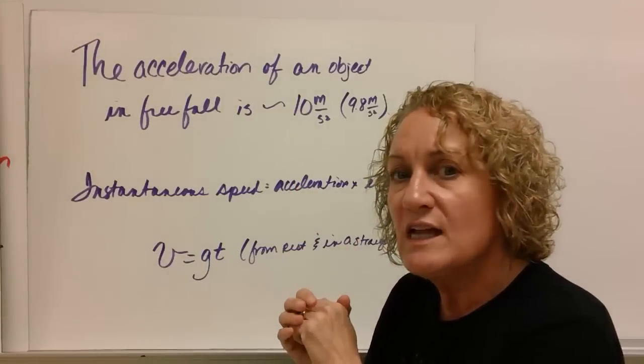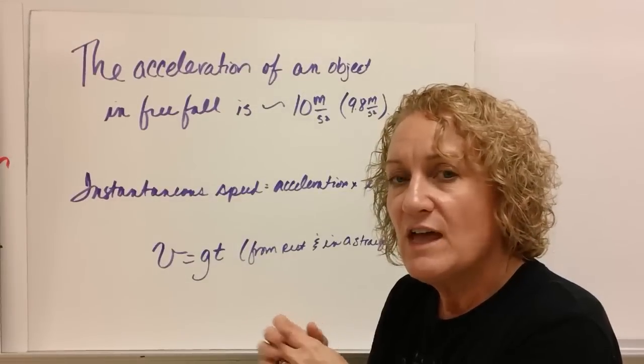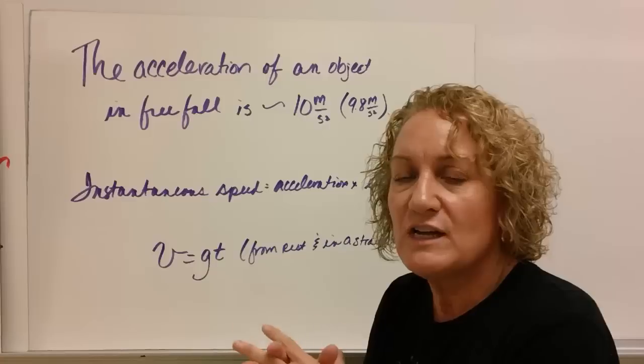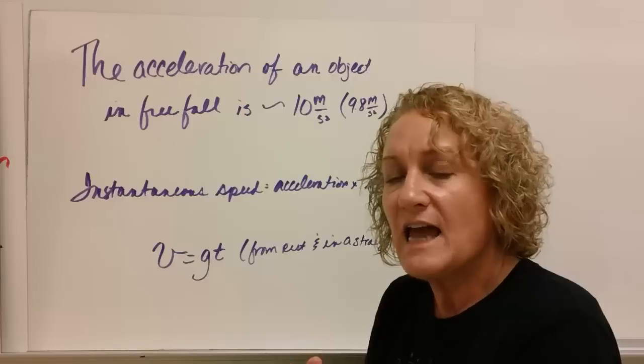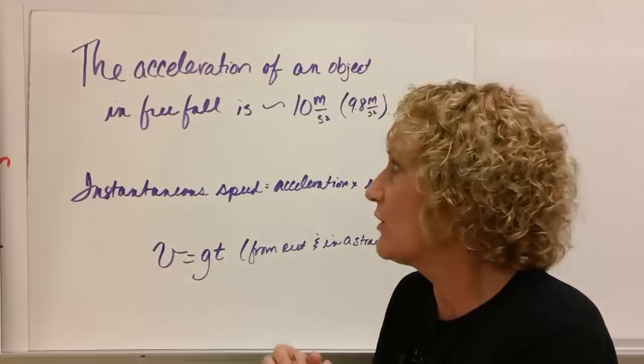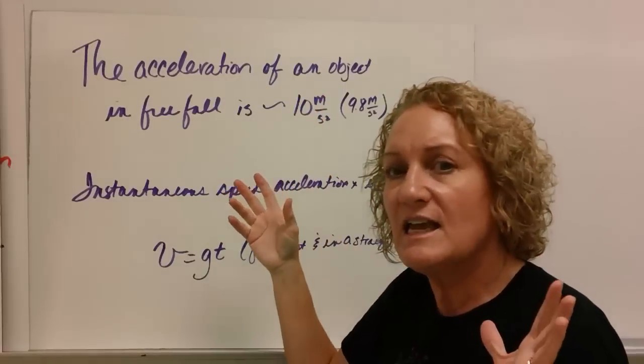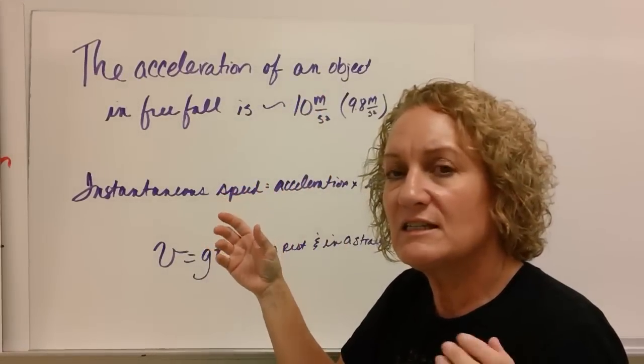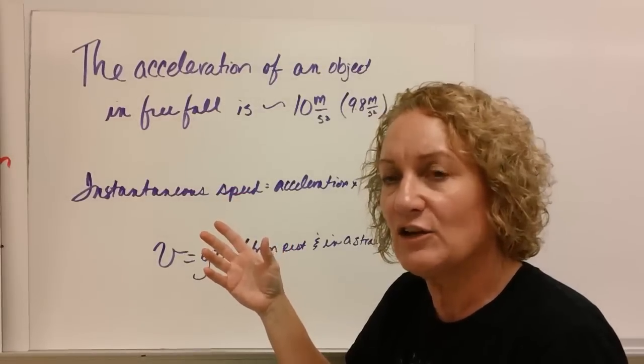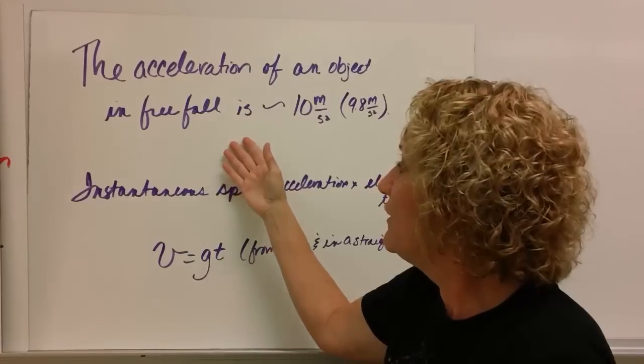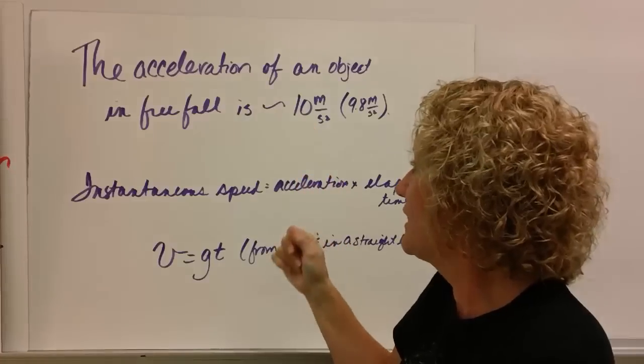The acceleration of an object in free fall is about 10 meters per second squared. If you need to be very accurate, use 9.8 meters per second squared. It is slightly different at different places on earth. That's why we use 9.8 if we're being accurate or 10 if we're rounding. And what's really interesting, it's for an object. It doesn't say how big the object is. It doesn't say how much it weighs. It doesn't matter.